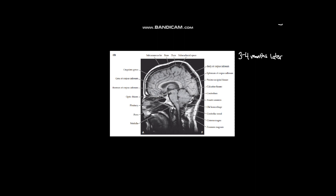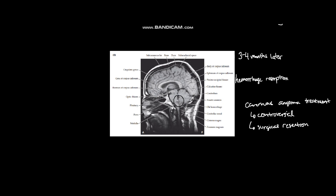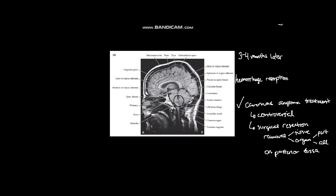Three to four months later, a follow-up MRI scan revealed resorption of the hemorrhage. Though the treatment of cavernous angiomas is controversial, the high risk should another bleed occur in this location led to the decision to treat it by surgical resection — removal of tissue — performed on the posterior fossa. The cavernous angioma was confirmed through pathologic examination of the tissue.